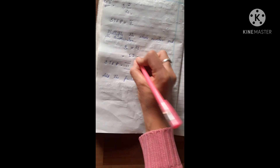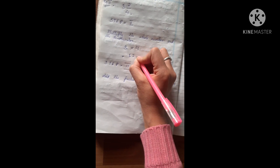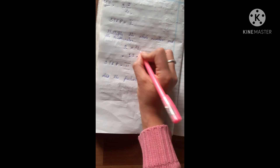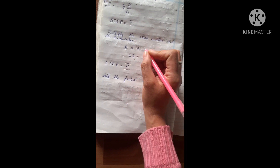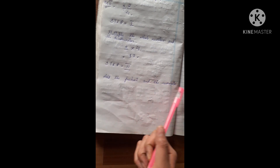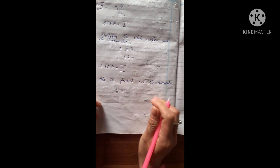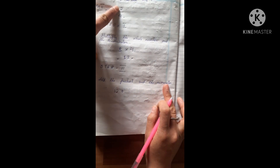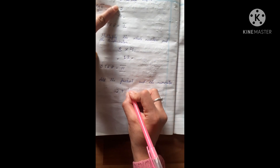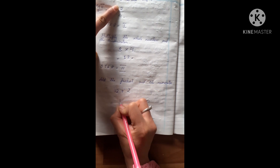Step number two: add the product and the numerator. The product is 12 and the numerator is 2, so we add them to get 14.